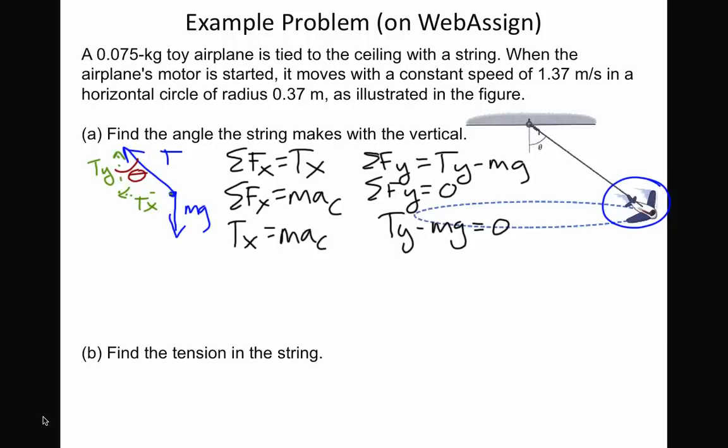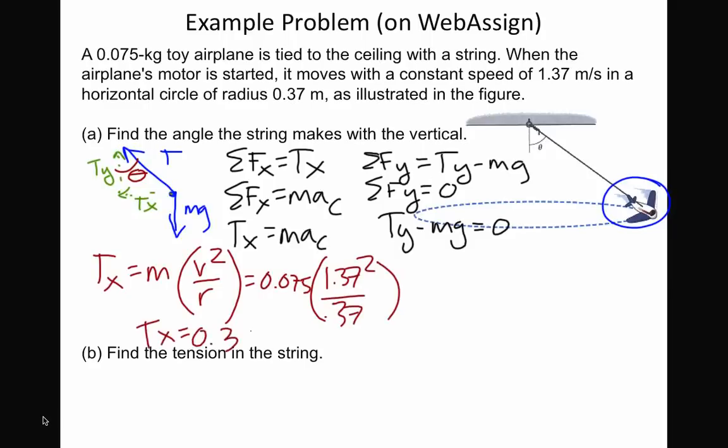Let's start with the x. This is where it's different. The acceleration now is v squared over r. So we can plug in our values. This is 0.075. I'm going to omit the units for time's sake. And we find that Tx equals 0.38 newtons.